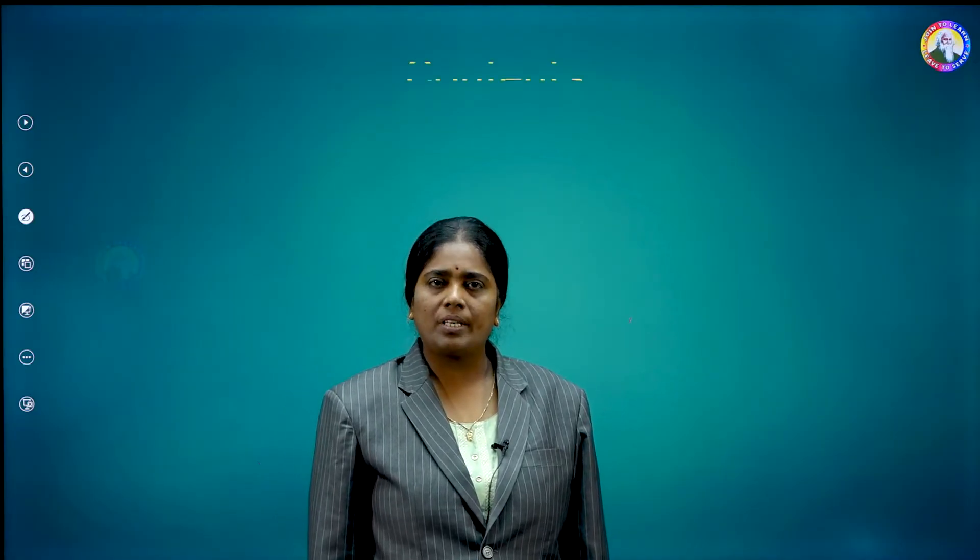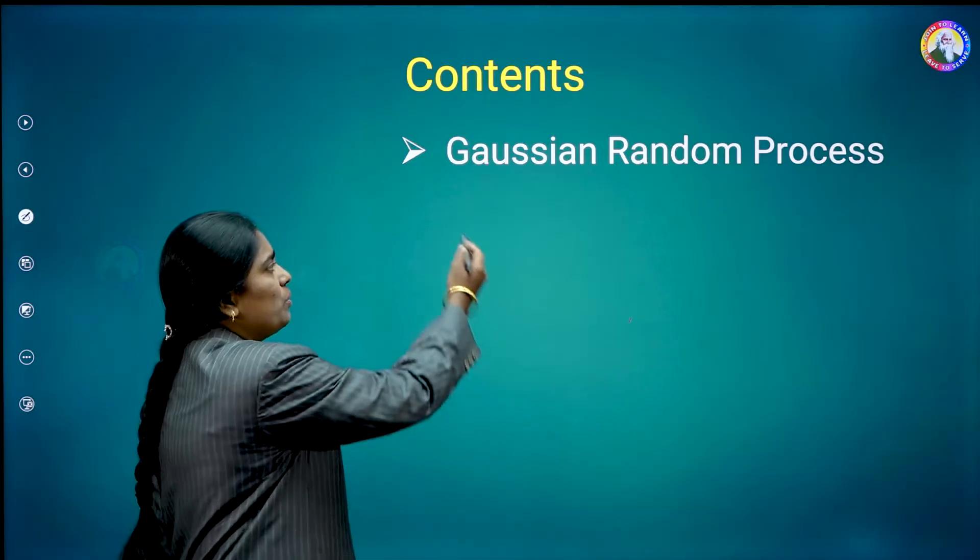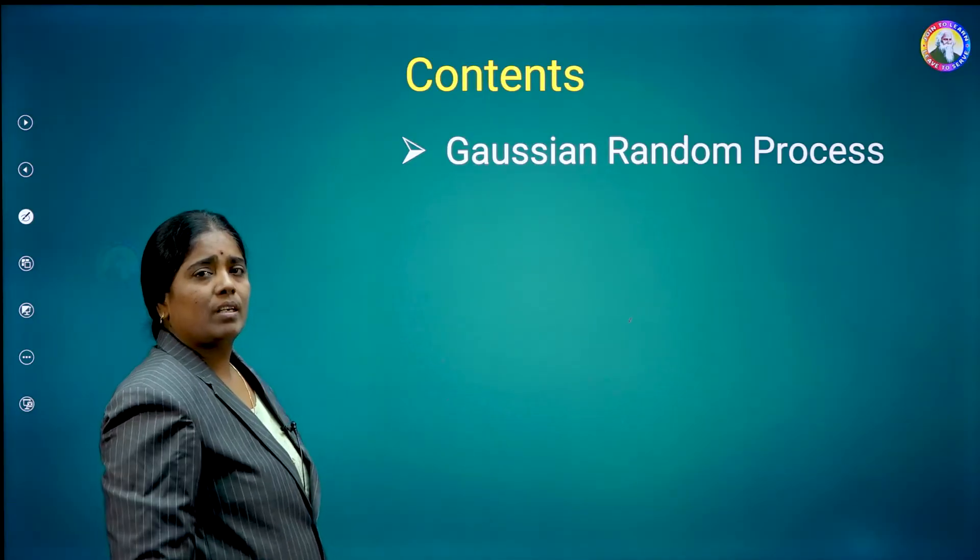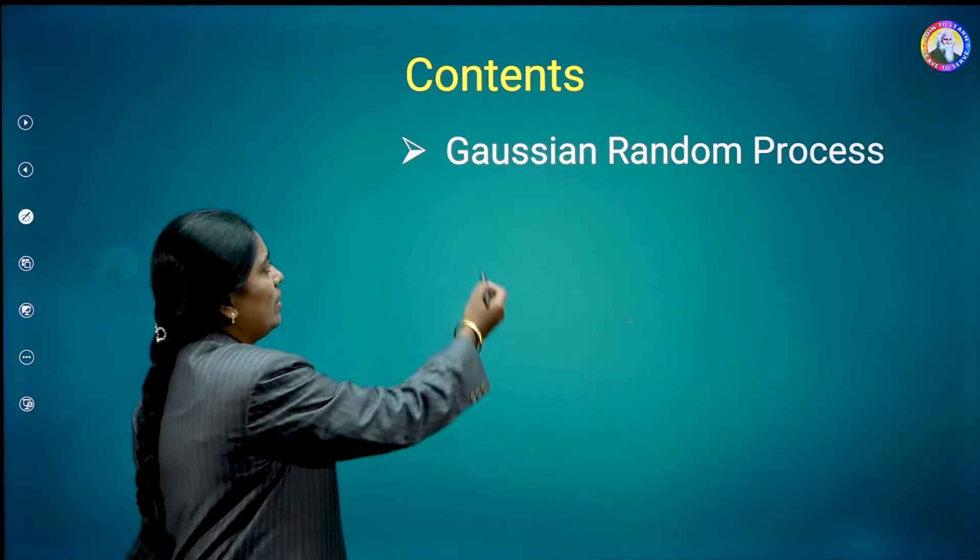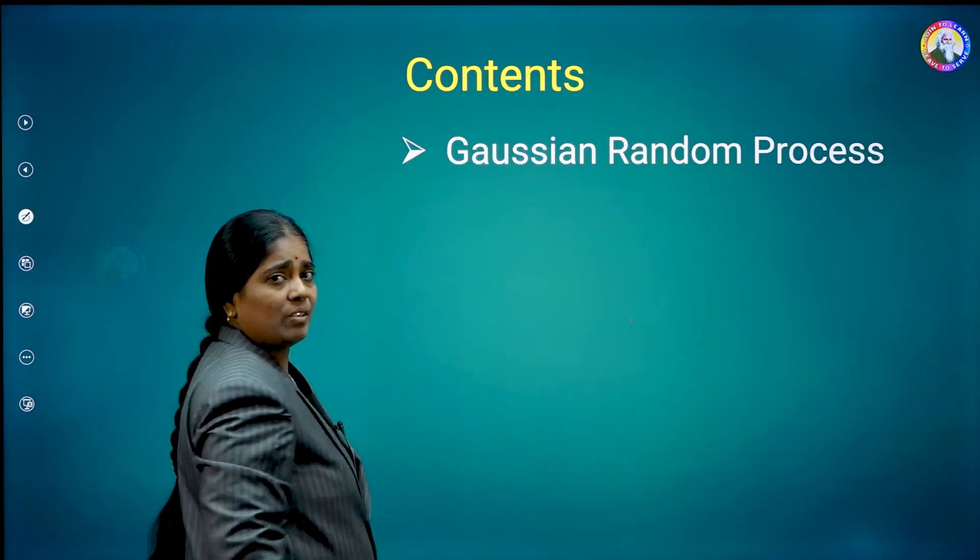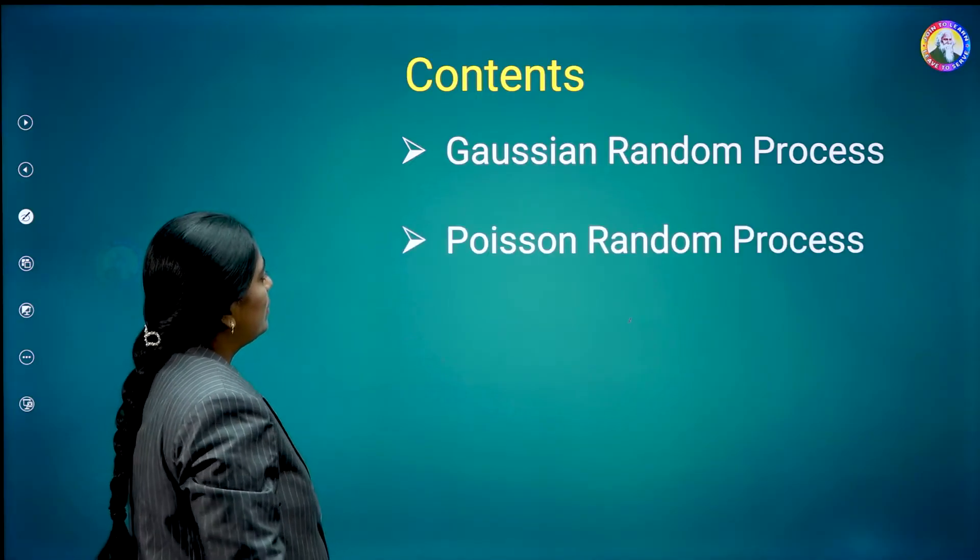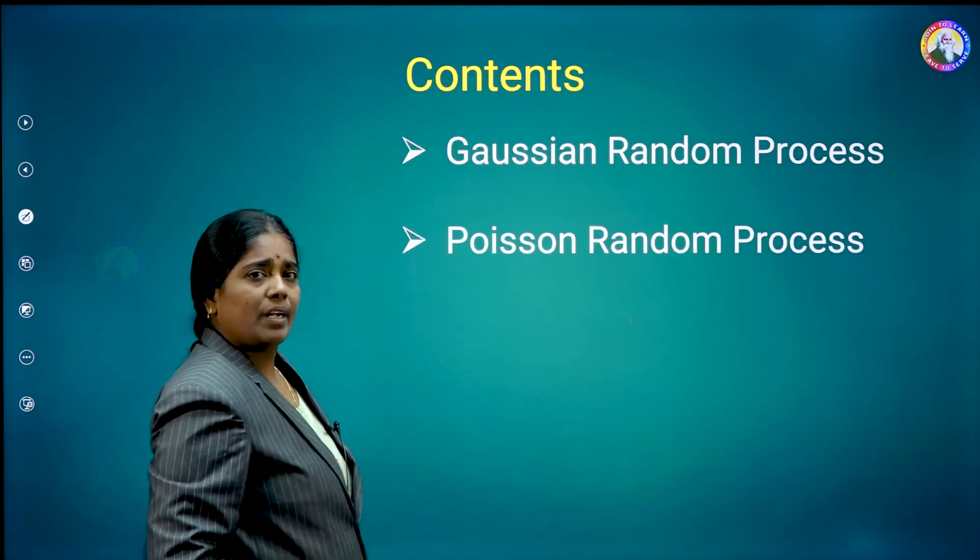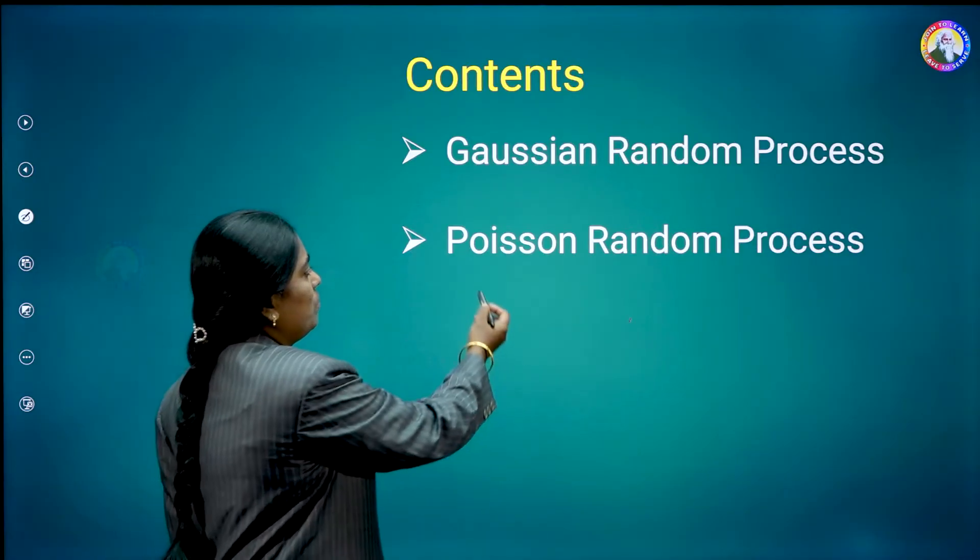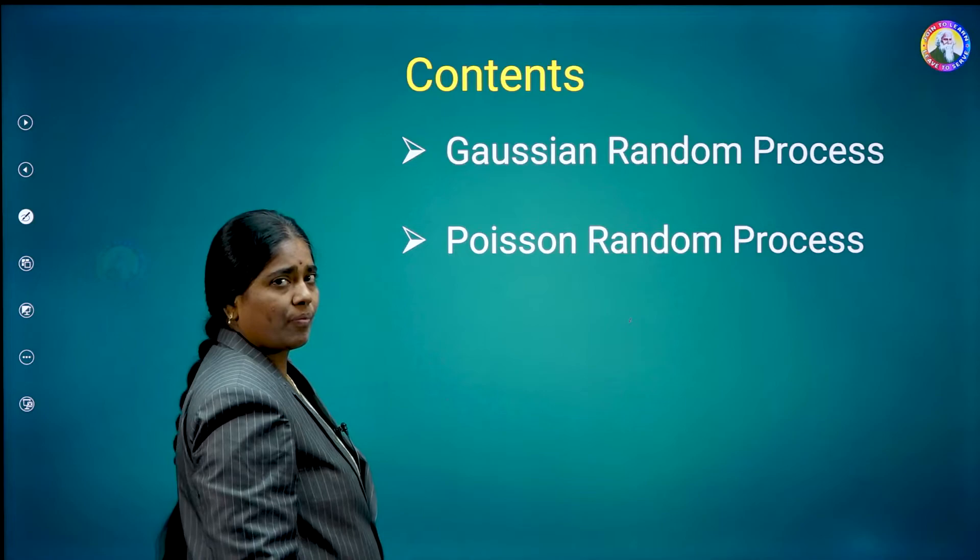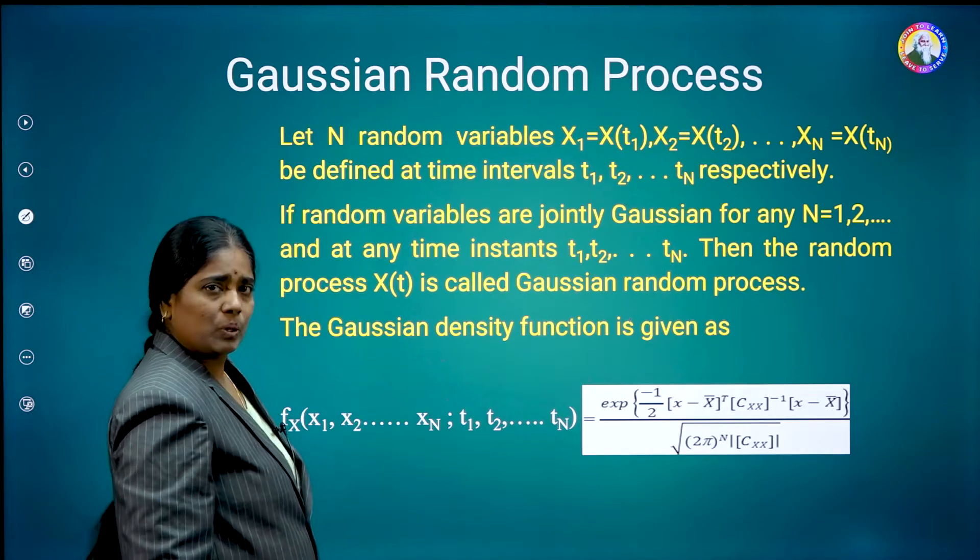Now, by including time t, random variable will become a random process. Hence, in this video, I would like to explain about Gaussian random process. That means, in the Gaussian random variable, by including time t, we are going to frame it as a Gaussian random process. And the next one is Poisson random process. In the Poisson random variable, by including time t, I will explain about the Poisson random process. First, we will see about Gaussian random process.